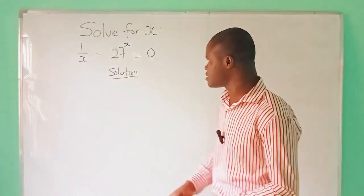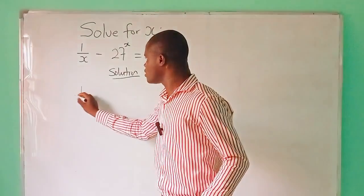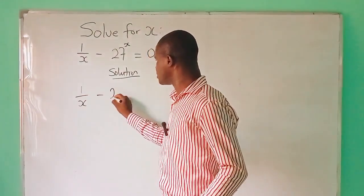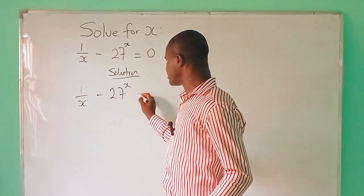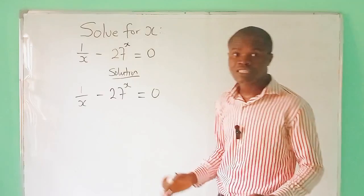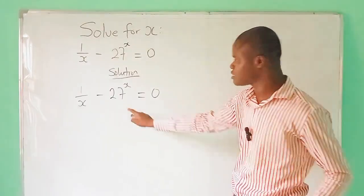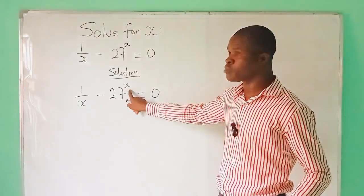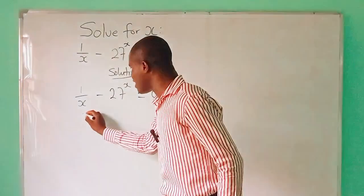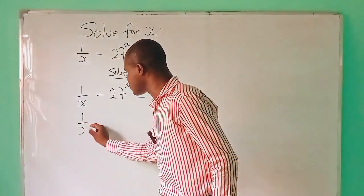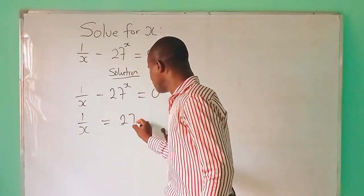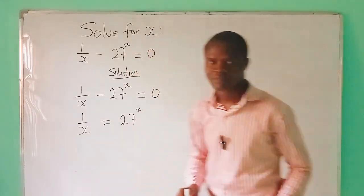When you are given a question like this, you are given 1 over x minus 27 raised to the power x equal to 0. The first thing to do is to move 27 raised to the power x across the equal sign. We now have 1 over x is equal to 27 raised to the power x.